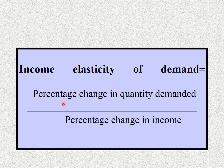يعني النسبة المئوية للتغير في الطلب over النسبة المئوية للتغير في الدخل. يعني قد إيه الطلب بيتغير بنسبة كام لما الدخل بيتغير بنسبة كام. يعني أنا دخل اتغير بنسبة كذا والطلب اتغير بنسبة كذا.